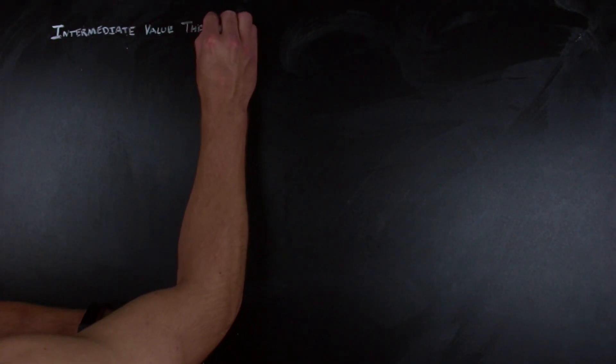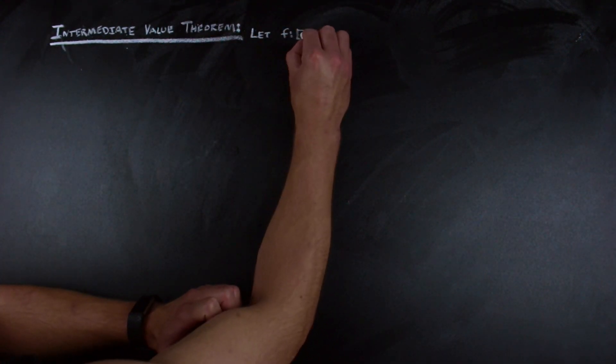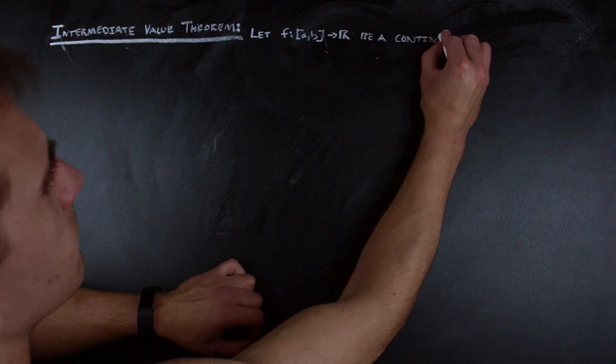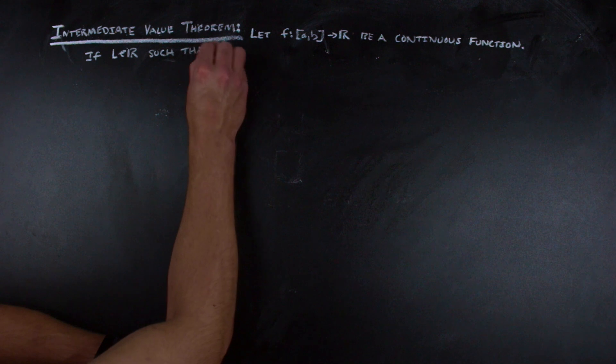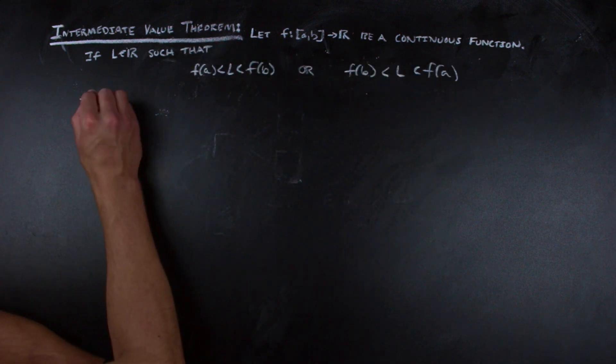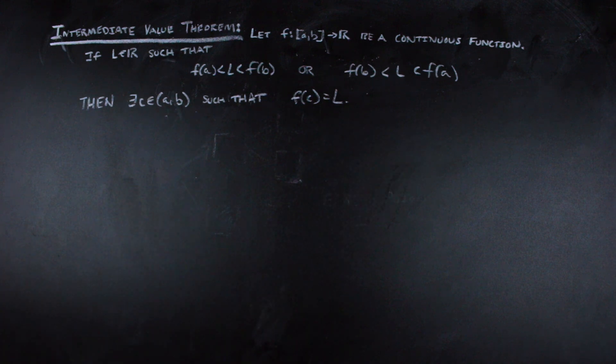To start off, we'll just go over what the intermediate value theorem says. That is, letting f from the closed interval a to b to the real numbers be a continuous function, if l is a real number such that l is between f(a) and f(b), then there exists a c in the interior of the domain of f such that f(c) is equal to l.